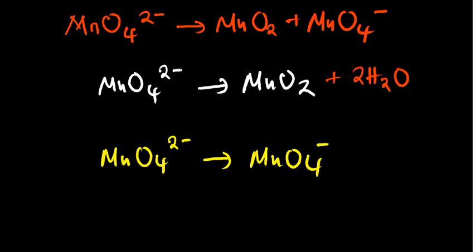Each time we balance oxygen atoms, there is an issue with the hydrogen atoms, so we balance hydrogen atoms as our next step. On the right-hand side we add 2 times 2, which is 4 hydrogen atoms. At this point we've balanced oxygen, hydrogen, and also manganese.